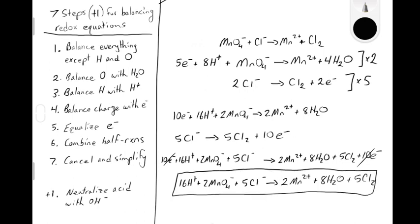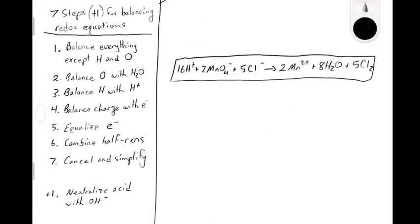Redox reactions happening in acidic solutions are described as happening in acid, which can be identified by the presence of H⁺ ions in the reaction equation. There is another situation where redox reactions can occur — occasionally a reaction will happen only in basic solution. If it's happening in basic solution, it's not appropriate to have H⁺ ions present, so we have to neutralize the acid with OH⁻. This would be our additional extra step. What we have on the screen is balanced in acid, but if the question asks for the reaction balanced in base, we would need to do this additional step.